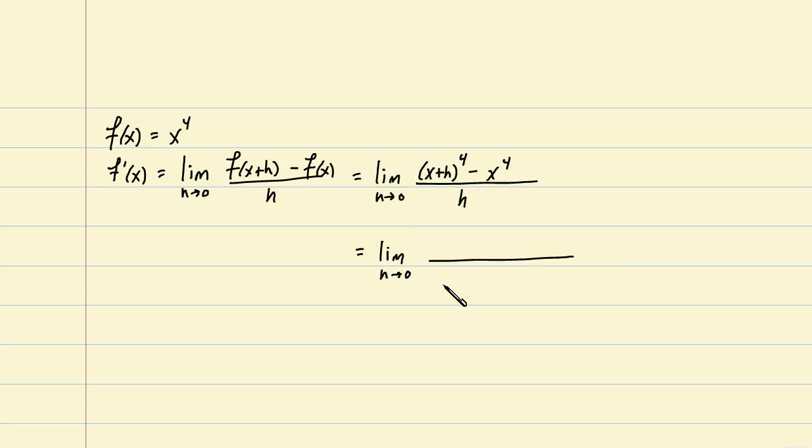Well, you may recall certain small powers of binomials. For example, (a+b) to the first is, of course, a+b. (a+b) to the second is probably one you've committed to memory: a squared plus 2ab plus b squared. (a+b) to the third, maybe you have that one committed as well: a cubed plus 3a squared b plus 3ab squared plus b cubed.